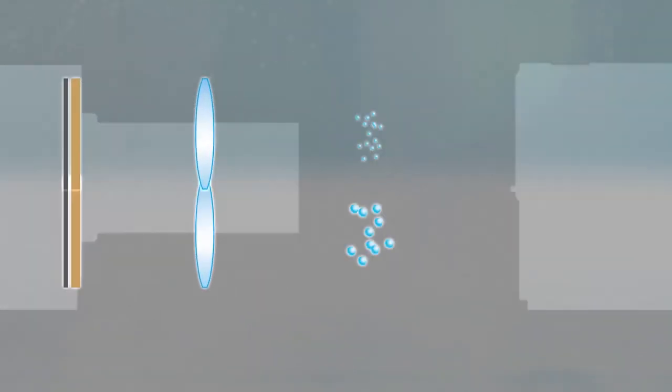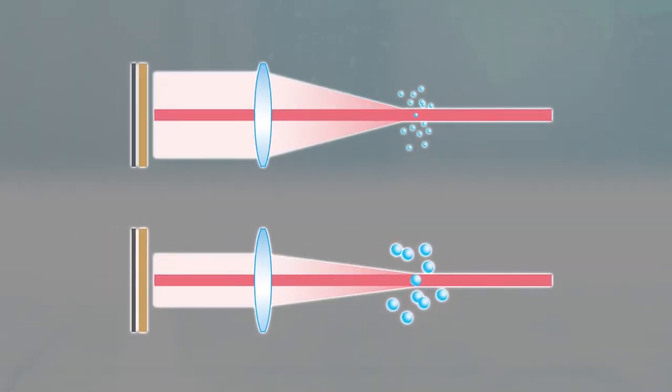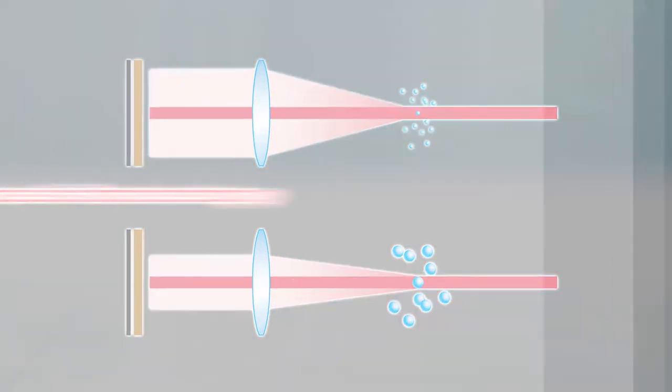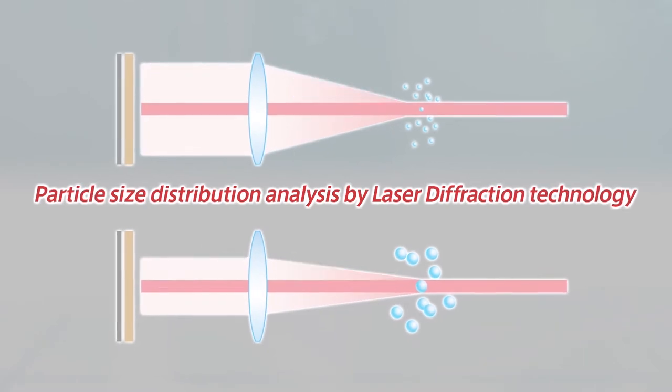The scattering pattern detected correlates directly with droplet particle size. Aerotrack 2 applies an algorithm that interrogates the detected scattering pattern and calculates the particle size distribution.